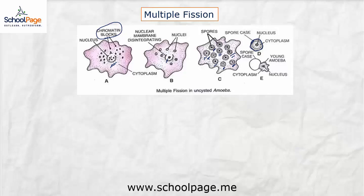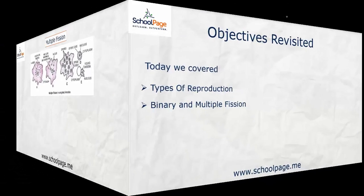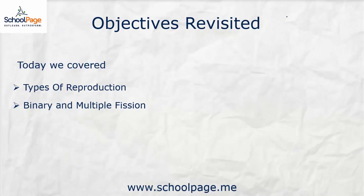Fission is a kind of reproduction seen in unicellular organisms. Not only amoeba, but other unicellular organisms like paramecium and euglena also undergo binary fission. Multiple fission is also seen in the malarial parasite Plasmodium vivax. In this video you learned the different types of reproduction, and in particular binary and multiple fission.